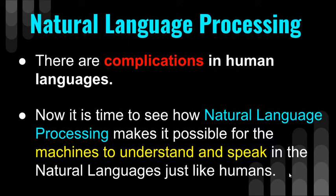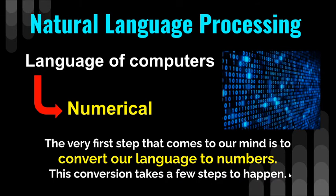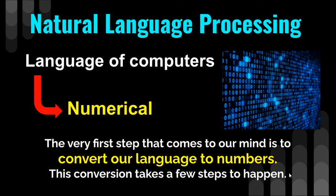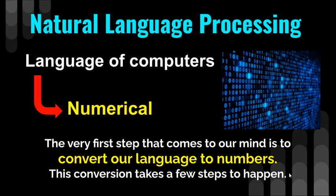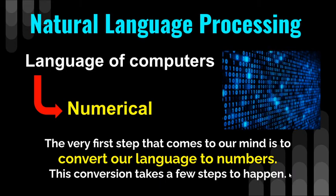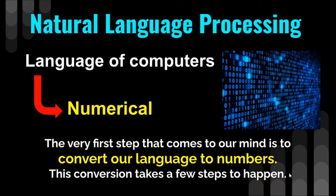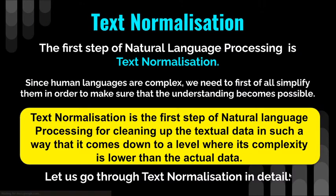Now let's see how NLP can understand human language and natural language. We know that the language of the computer is completely numerical. So the first step that comes to mind is to convert our language to numbers so that the computer can understand it easily. Is it so? Let's go further.